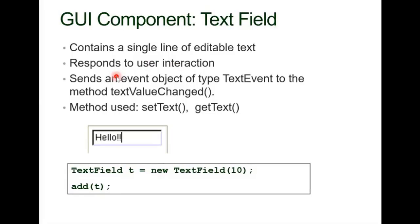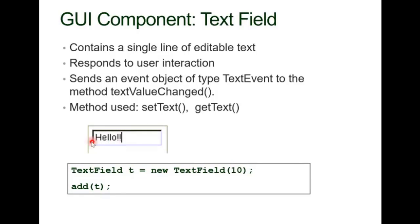The TextField contains a single line of editable text — you can edit it. It responds to user interactions using an event object of type TextEvent, sent to the method textValueChanged(). The methods used are setText() and getText(). You create it as: TextField tf = new TextField(10) — the 10 means it will show 10 character spaces. If you put 15, it shows 15 character spaces. Then you add it using the add() function.